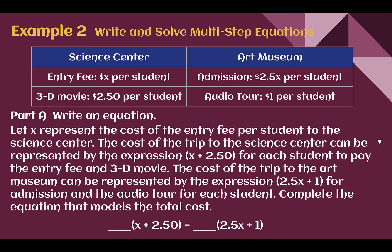Let's write the equation. X is the cost for the Science Center entry. Each student pays X plus $2.50 for entry and the 3D movie. For the Art Museum, each student pays 2.5X plus $1 for admission and the audio tour. With 20 students at the Science Center and 15 at the Art Museum, we set them equal: 20 times (X plus 2.50) equals 15 times (2.5X plus 1).